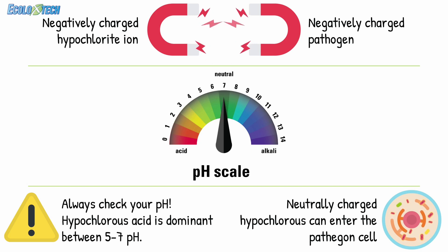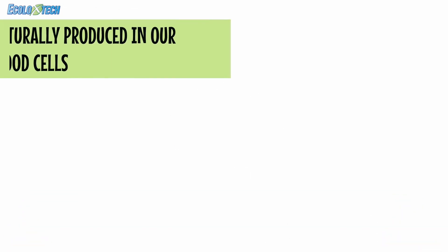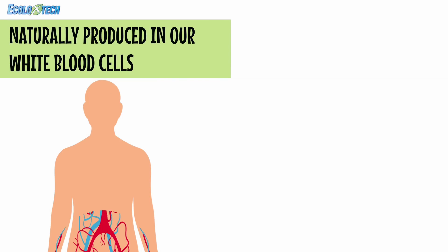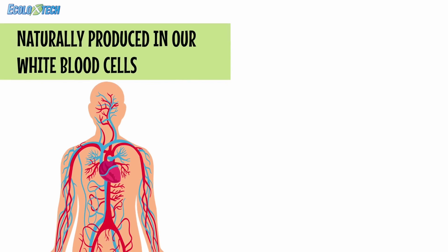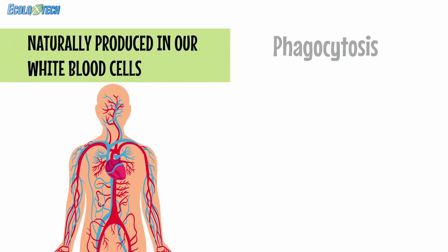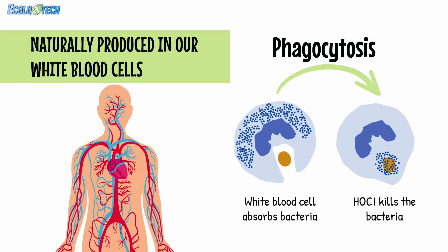This allows hypochlorous acid to approach and disable pathogens with ease — that's one of the reasons why it's more effective than bleach at controlling pathogens. So make sure you always measure your pH; that's the key to hypochlorous's germ-killing power. Our own human bodies produce hypochlorous acid in our white blood cells to fight off invasive pathogens. It invades the pathogen's cell walls and disarms it through a process called phagocytosis — think of it as the undercover sting agent of disinfectants.